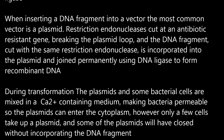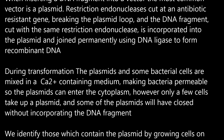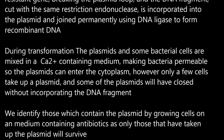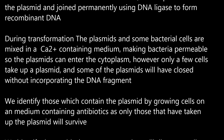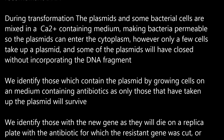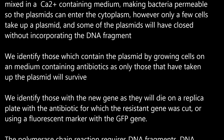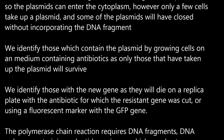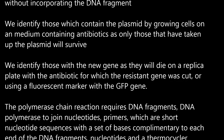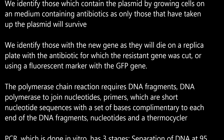During transformation, the plasmids and some bacterial cells are mixed in a Ca2+-containing medium, making bacteria permeable so the plasmids can enter the cytoplasm. However, only a few cells take up a plasmid, and some of the plasmids will have closed without incorporating the DNA fragment. We identify those which contain the plasmid by growing cells on a medium containing antibiotics, as only those that have taken up the plasmid will survive. We identify those with the new gene as they will die on a replica plate with the antibiotic for which the resistance gene was cut, or using a fluorescent marker with the GFP gene.